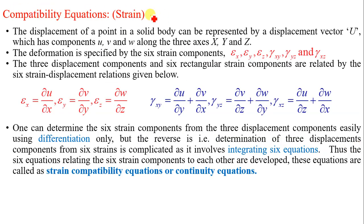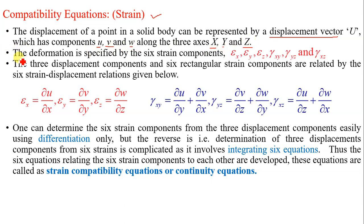What are the compatibility equations of strain? The displacement of a point in a solid body can be expressed by the displacement vector U, with components u, v, and w along x, y, and z. The deformation is specified by the 6 strain components, and the 3 displacement components and 6 rectangular strain components are related by 6 strain-displacement relations.